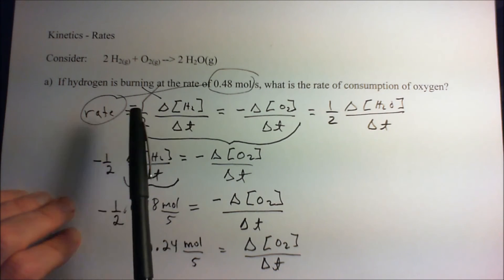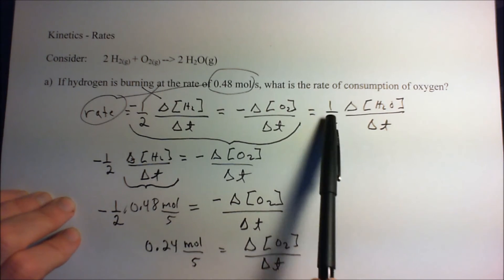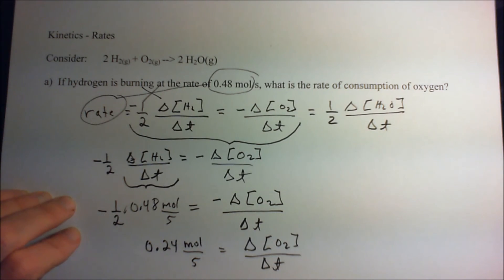Not only that, but if we write it out, keep in mind that whatever's on the left is going to have a negative sign in front of it, and whatever's on the product is going to have a plus sign. Because this is being consumed, this is being produced.